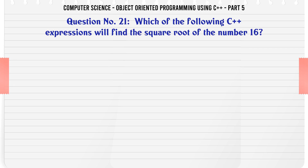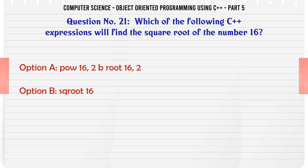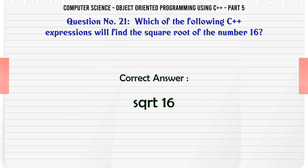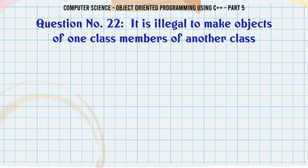Which of the following C++ expressions will find the square root of the number 16? A. pow(16, 0.5). B. sqrt(16.0). C. sqrt(16.0). D. sqrt(16). The correct answer is: sqrt(16).